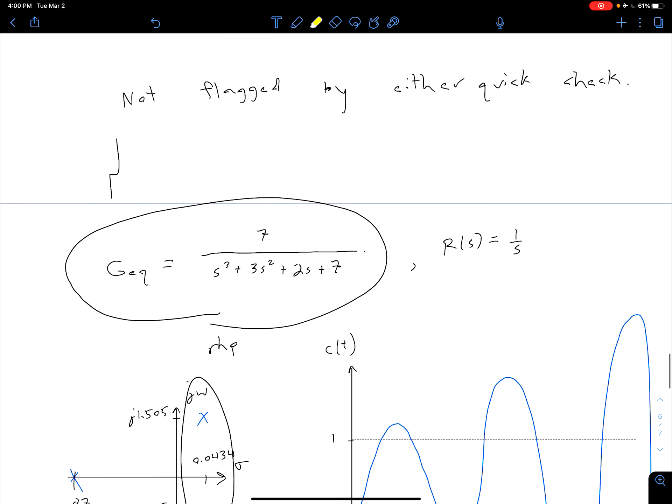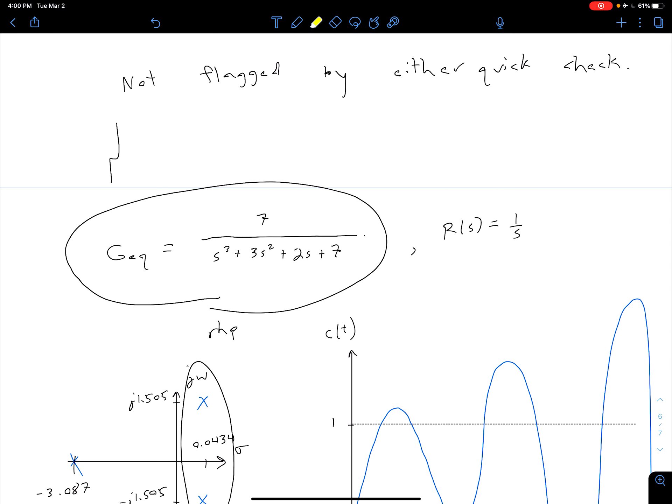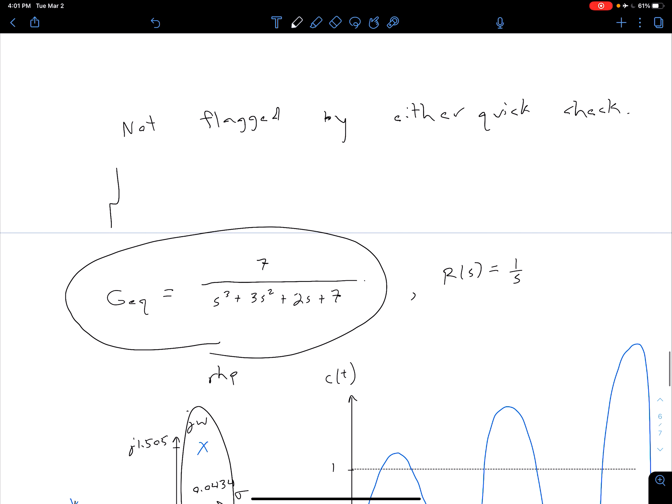We also see that the coefficients in that polynomial all have the same sign. So we have a plus 1 coefficient, a plus 3, a plus 2, and a plus 7. So all coefficients have the same sign. And so again all that that's telling us is we can't immediately say the system is unstable. It does not mean that our system is stable.